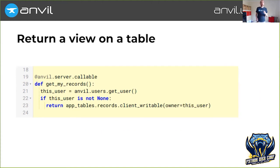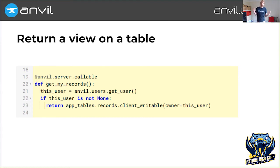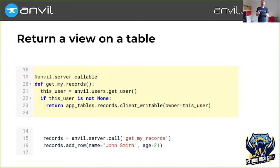We can be even cleverer, because data tables themselves are also live objects — so we can return a view on a table. We get a subset of a table for the currently logged-in user: we get the current user, check if someone is logged in, take app_tables.records and get a client-writable view on that table — but it's a restricted view, only applying to rows where the owner column matches the current user. That restriction is encoded in the live object, transmitted back to the client, so the client can use it like a data table. It can add rows from client code, saving you a lot of plumbing. But it's safe because you can only do that if the trusted server-side code decided to give you that object. Possession is permission.